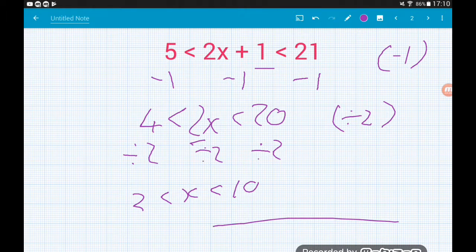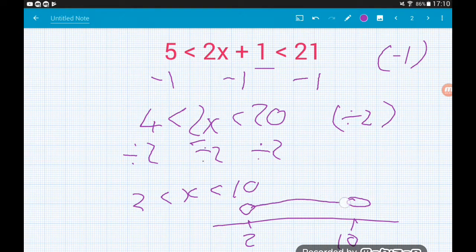So if we were to work that out on a number line, we would want to find 2, we would want to find 10. And above each of them, we're going to put a hollow circle because both of our inequalities are strict. And then we just join them together with a straight line. So on with the next one.